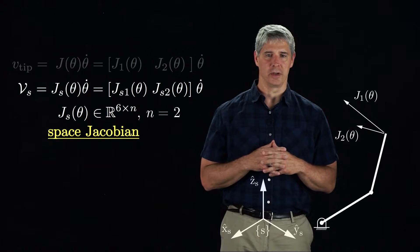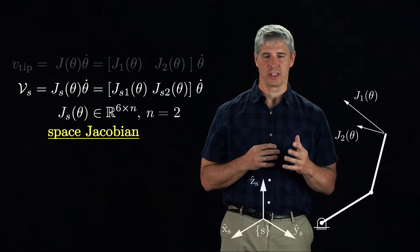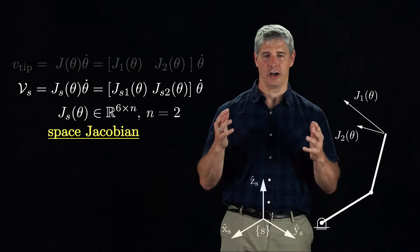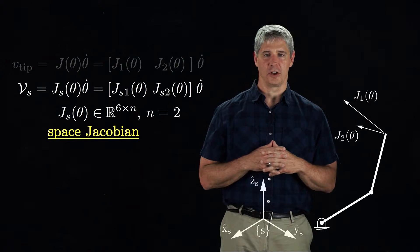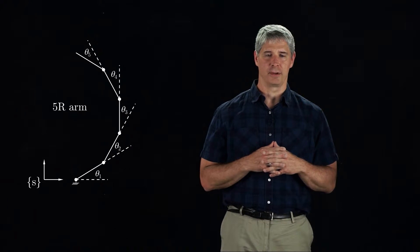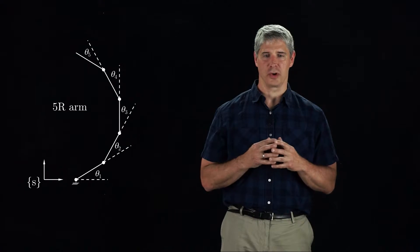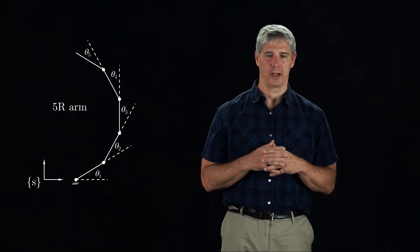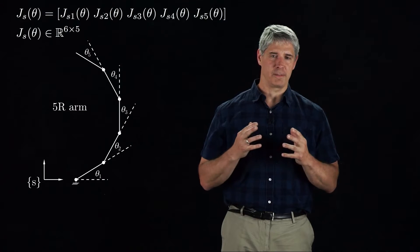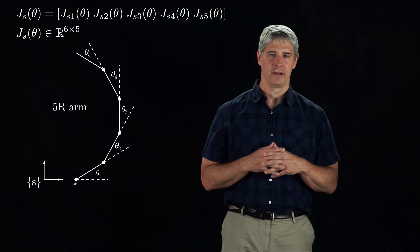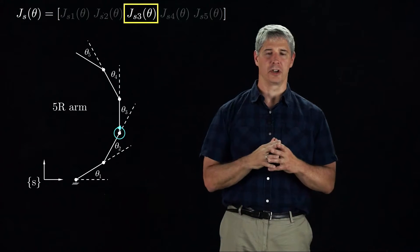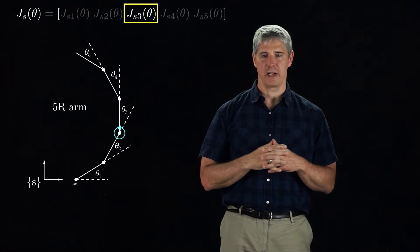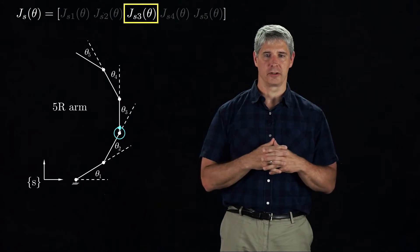Each column of the space Jacobian is the spatial twist when that joint's velocity is 1 and the velocity at all other joints is 0. To derive the form of the space Jacobian, let's use a specific example: a 5R arm whose joint angles are given by theta 1 through theta 5. Then the space Jacobian is 6 by 5. Let's focus on Js3, the third column of the space Jacobian, which corresponds to the spatial twist when the velocity at joint 3 is 1 and the velocity at all other joints is 0.